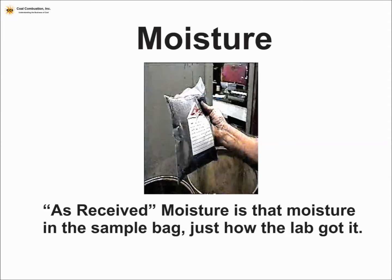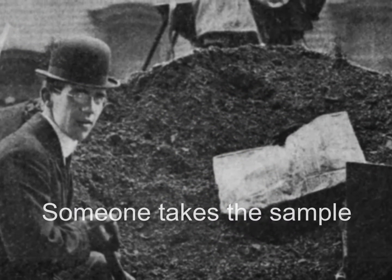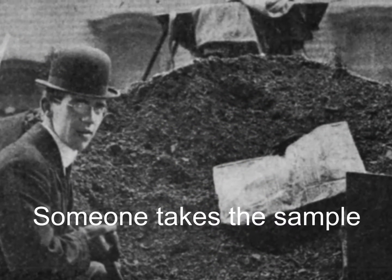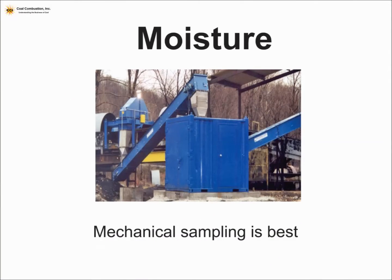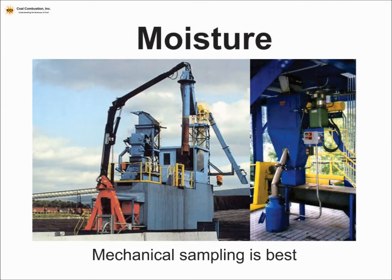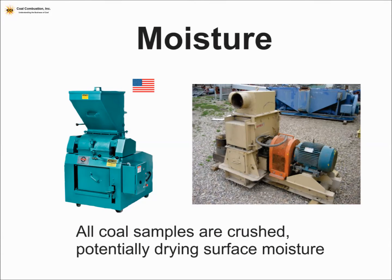That's how the lab got it — hopefully it's representative. Someone takes a coal sample and is responsible for preparation before it goes into the lab. Most samples are taken using a mechanical sampler, but there are many different styles and forms. They all try to limit the loss of surface moisture, but they usually contain a crusher, and crushers generate heat and wind flow, which can impact that surface moisture.